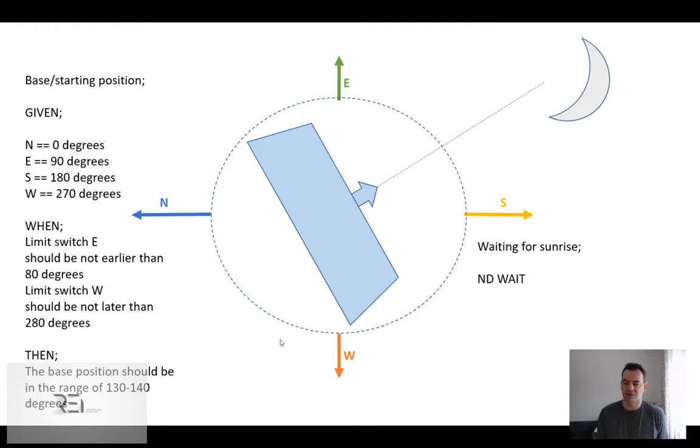This is the typical position where the tracker should stand and wait for the next day. It's something in between 130 to 140 degrees. Why is this the best way? If I know that the sun is starting here...